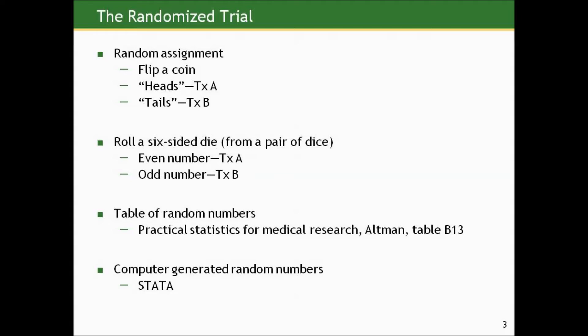Put them in treatment B if the number was odd. What's more likely that you'll do in real life is use a computer. We can generate random numbers in the computer easily and then use them to decide treatment. So we might generate random numbers between zero and one, and then put person in treatment A if the number is less than 0.5 and put them in treatment B if it's greater than or equal to 0.5.